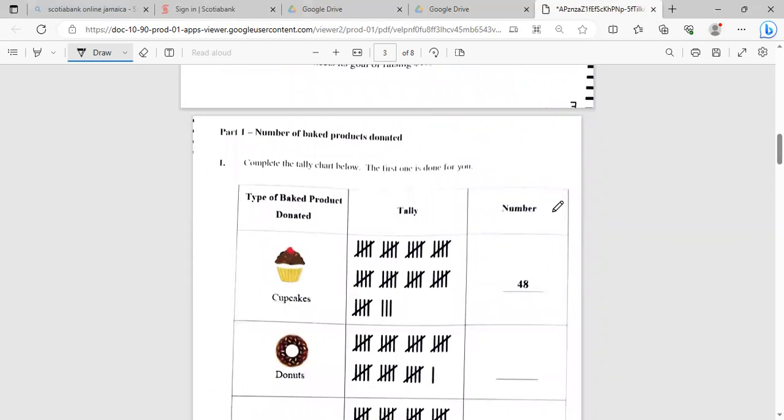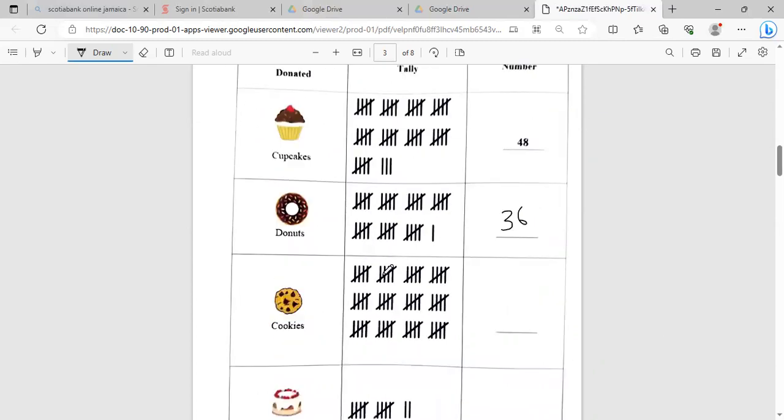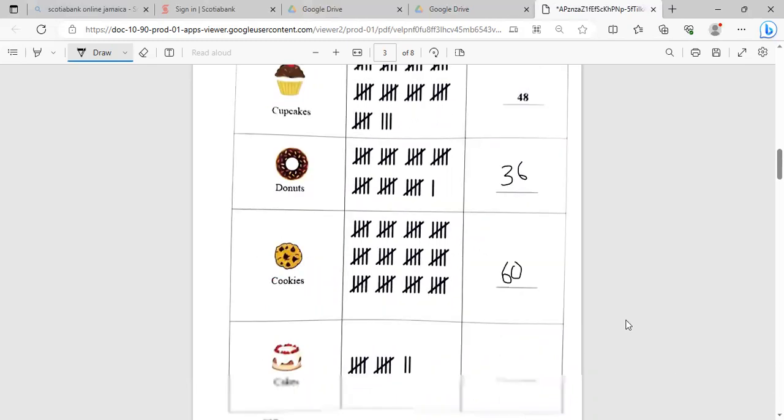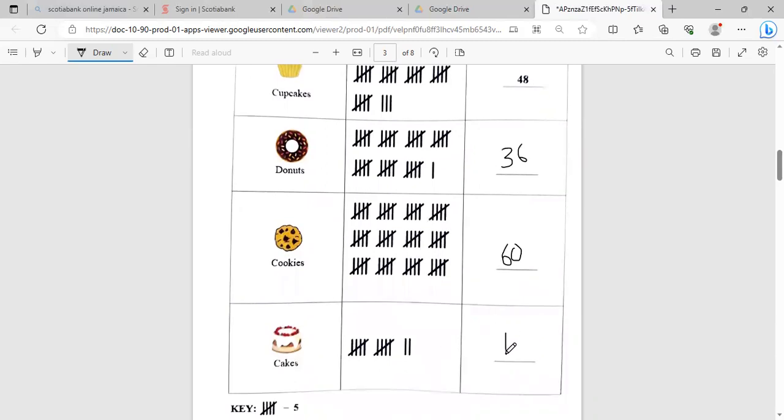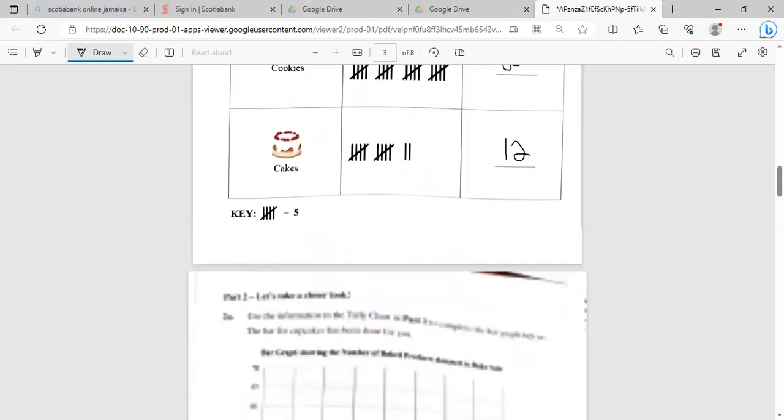So here we have a tally table and this is the number. We're going up by 5: 5, 10, 15, 20, 25, 30, 35, 45, and 3 more is 48. That one was done for you. In terms of cupcakes, 5, 10, 15, 20, 25, 30, 35, and 1 more is 36. For doughnuts, 5, 10, 15, 20, three times 20 is 60, so that's a total of 60 doughnuts. And for the cake, 5, 10, and 2 more is 12.